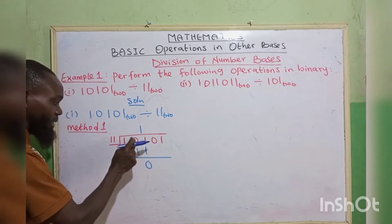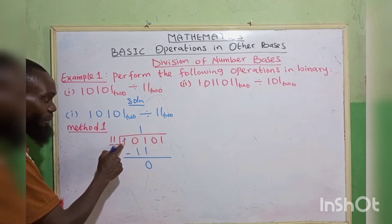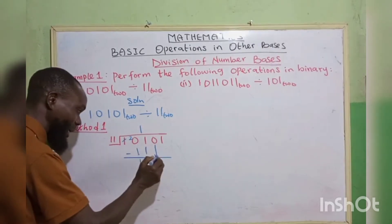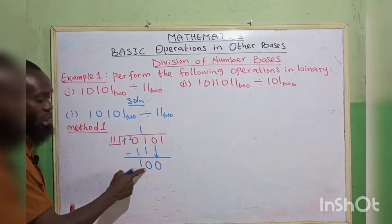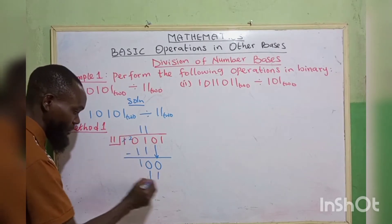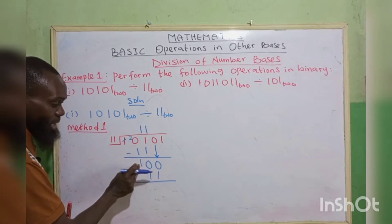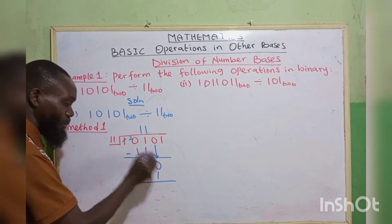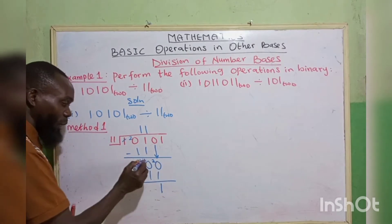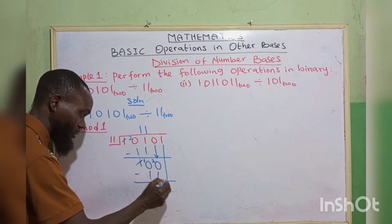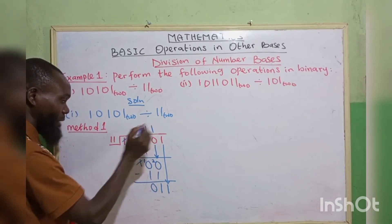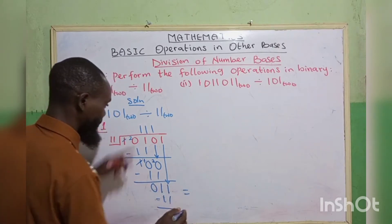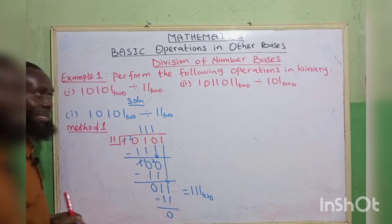1 minus 1 is 0. 0 minus 1 is impossible, so we borrow 1 from here. The 1 we borrow becomes our base, which is 2. So 2 plus 0 is 2, and 2 minus 1 is 1. Then take the 0 down, giving us 100. 11 can also go in 100 — it's 1. 1 times 11 gives 11. 0 minus 1 is impossible, so borrow again. This becomes 0; put in 1, making base 2. Borrow again; this becomes 1, put it here making 2. 2 minus 1 is 1, then 1 minus 1 is 0. Take the 1 down. Now 11 goes in 11 — we have 1. 11 times 1 is 11; subtract, giving 0. So our final answer is 111 base 2. That's for Method 1.